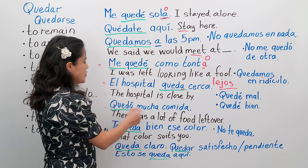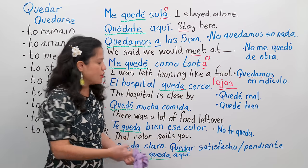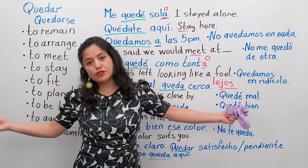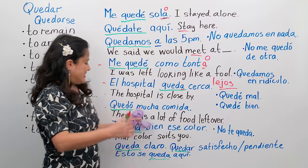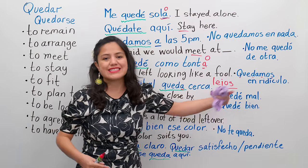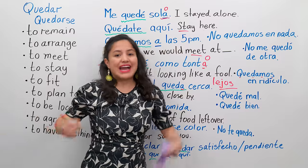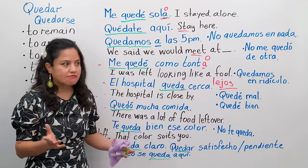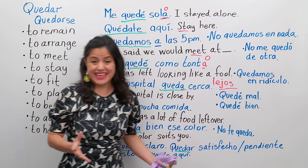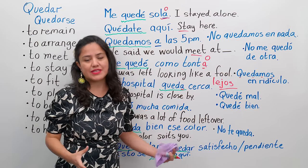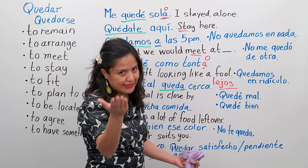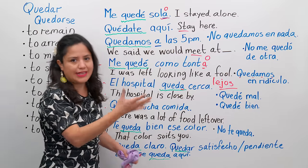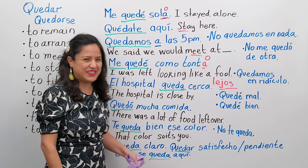Quedó mucha comida. There were a lot of leftovers, or there was a lot of food left over. When you have a gathering and there's a lot of food left over — ayer cociné para seis personas, yesterday I cooked for six people, but I think maybe I overdid it. So I had a lot of leftovers. Quedó mucha comida — ¿quieres un poco? Te mando un poco de comida porque quedó mucha comida. You can put it in the fridge — en el congelador, en el refrigerador.